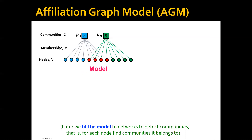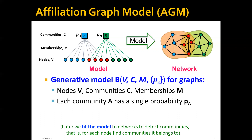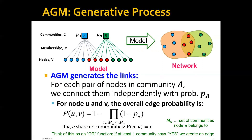We also have another set of parameters called membership, which defines which nodes belong to which community. To summarize, in this affiliation graph model we have: the set of nodes V, the set of communities C, the memberships M, and each community A has a single scalar probability P_A. Given these parameters, we can generate the whole network according to this generative process. For each pair of nodes in community A, we connect them independently with probability P_A.